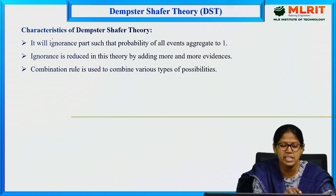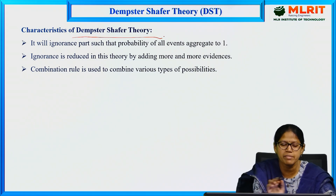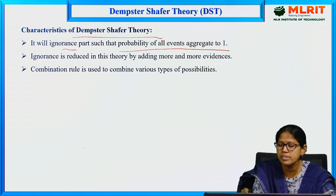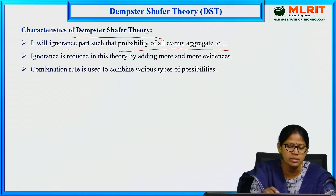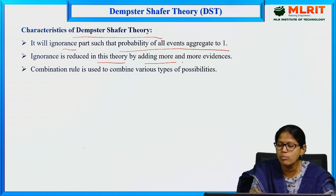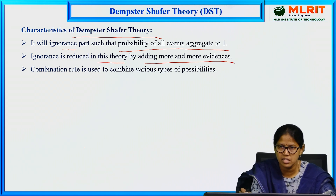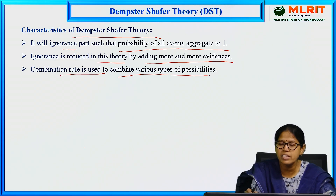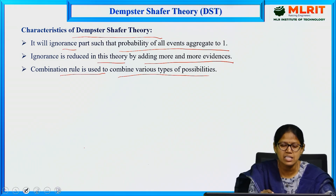Let us see the characteristics of Dempster-Shafer theory. It partitions ignorance such that probabilities of all events aggregate to 1. Ignorance is reduced in this theory by adding more and more evidences, as we have seen in the example. A combination rule is used to combine various types of possibilities.